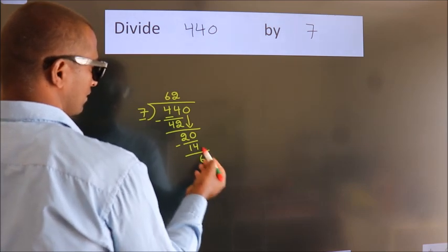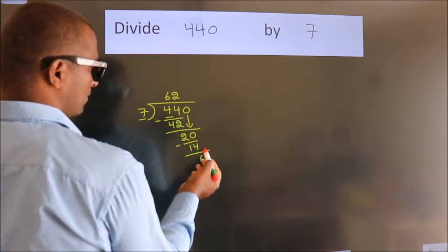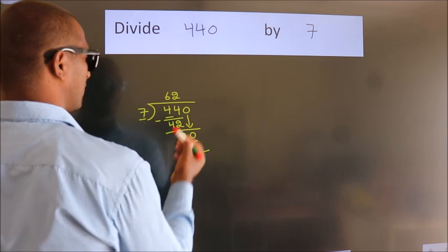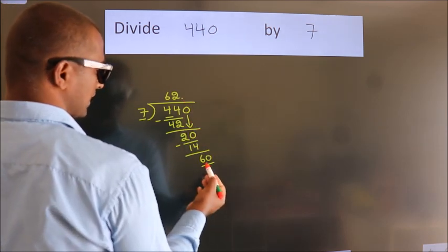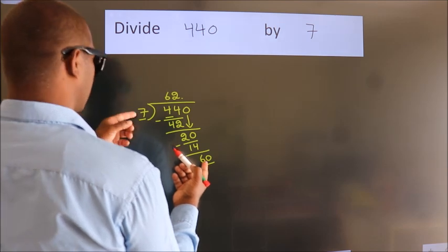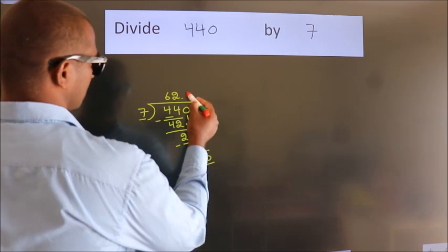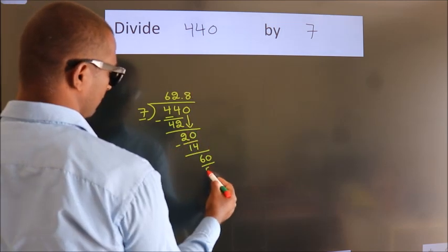After this, no more numbers to bring down. So what we do is put a dot and take 0, giving us 60. A number close to 60 in the 7 table is 7 times 8, 56.